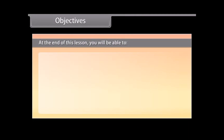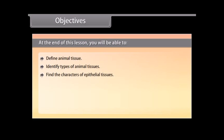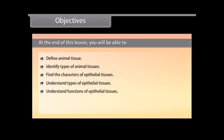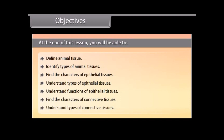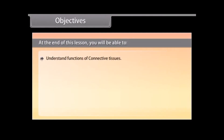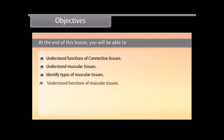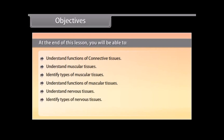At the end of this lesson, you will be able to: define animal tissue, identify types of animal tissues, find the character of epithelial tissues, understand types of epithelial tissues, understand functions of epithelial tissues, find the characters of connective tissues, understand types of connective tissues, understand functions of connective tissues, understand muscular tissues and their types and functions, understand nervous tissues, identify types of nervous tissues, and understand functions of nervous tissues.